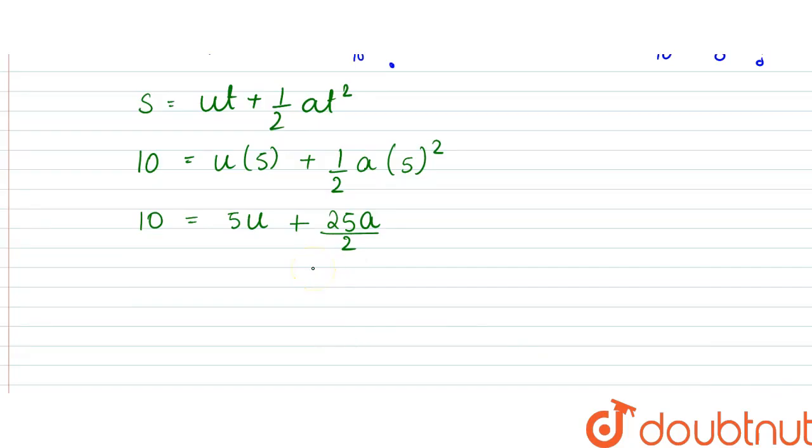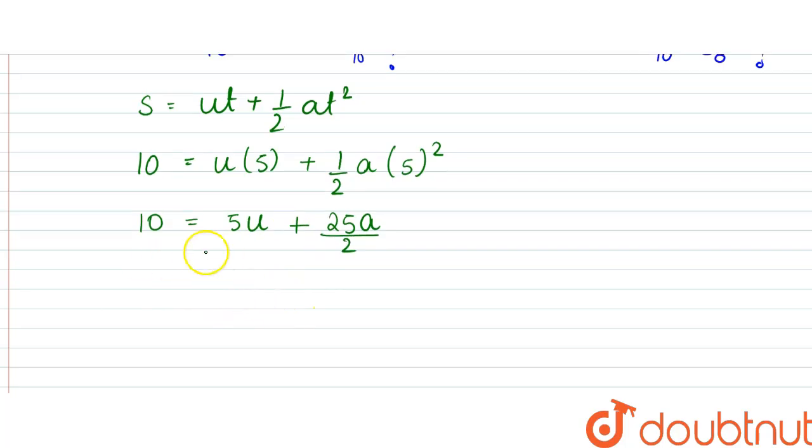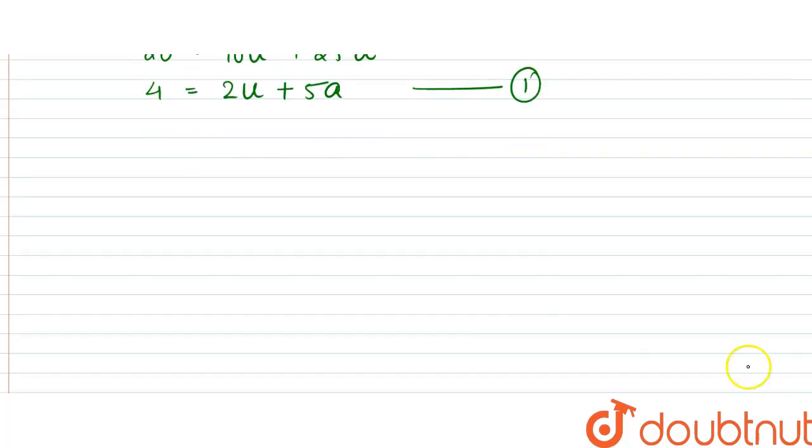This was equal to 10. So from here we can write that this was equal to 20, which is equal to 10u plus 25a. So from here, 4 is equal to 2u plus 5a. That would be our first equation.